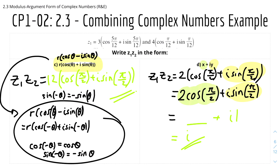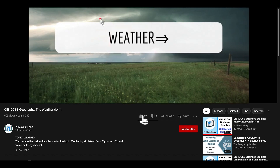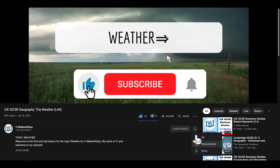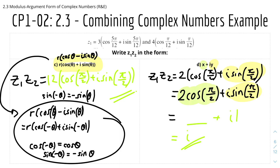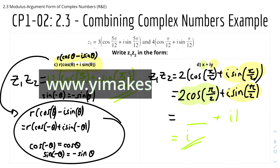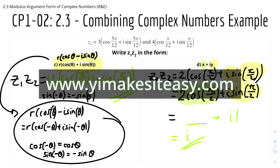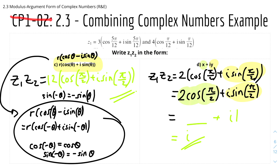That's it for this short video on the rules and examples for 2.3 Modulus and Argument Form for Complex Numbers. I hope you find it useful and helpful. If you have any questions or comments, leave them below. Check out my social media and website in the description at www.yemisteezy.com. I'll see you all in the next video, which will be 2.3 Modulus Argument Form — the Questions video. Until then, stay safe and happy learning.